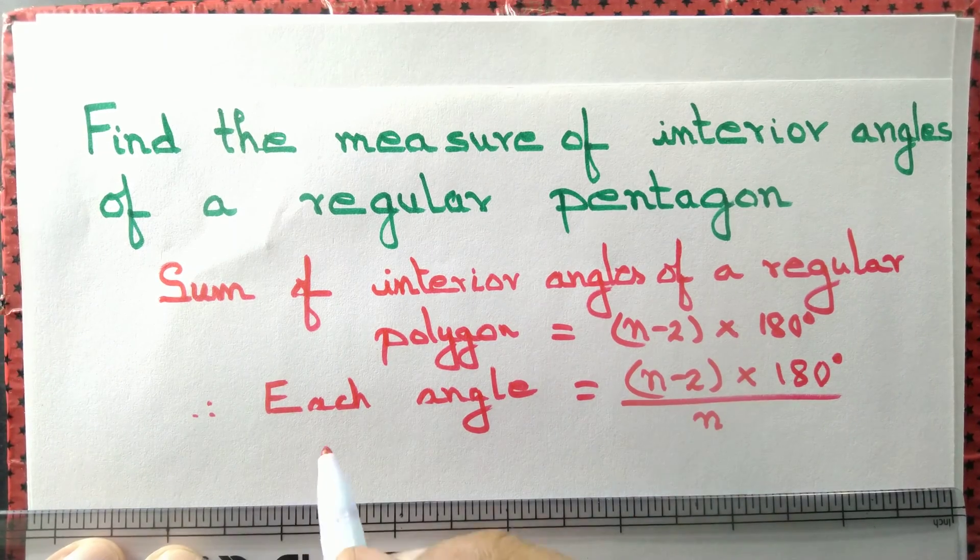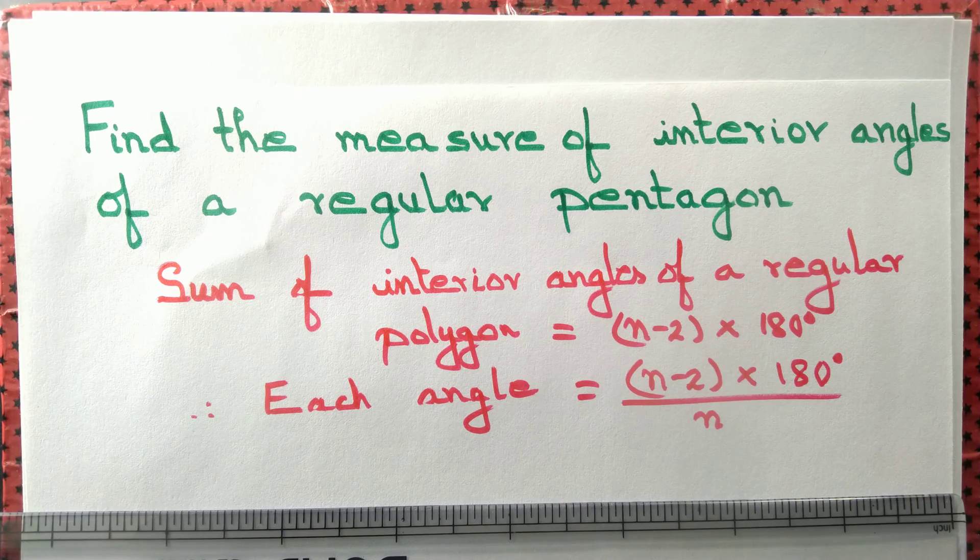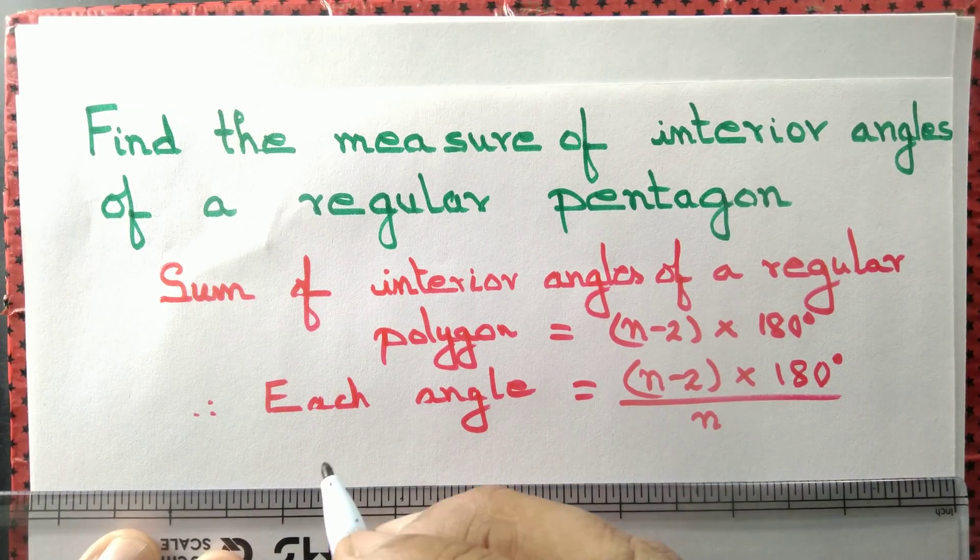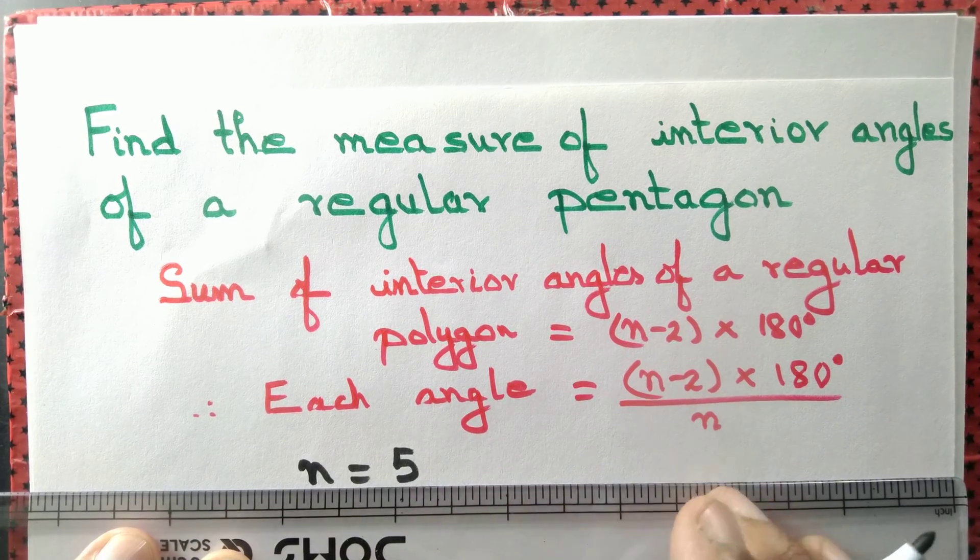In this case we have a pentagon, so n equals 5. Here n equals 5 because this is a pentagon.